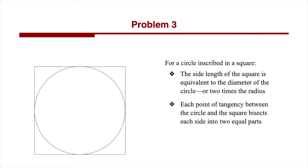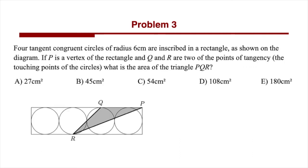When a circle is inscribed in a square, the side length of the square is equivalent to the diameter of the circle, which is two times the radius. Each point of tangency between the circle and the square bisects each side into two equal parts. Because the four circles are all tangent to each other, we can imagine four squares with circles inscribed in them arranged in a row. Choosing side QP as the base is the most straightforward, with the height being the height of the rectangle, perpendicular to the base.